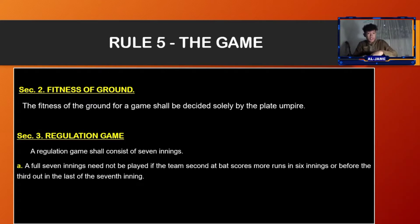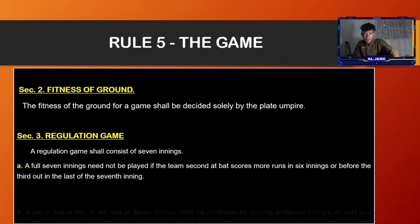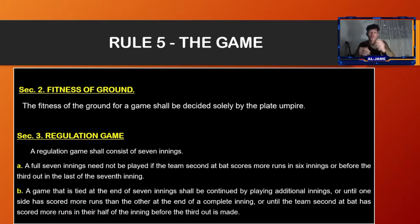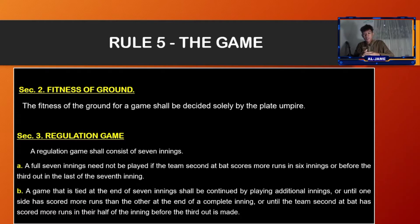A game that is tied at the end of seven innings shall be continued by playing additional innings until one side has scored more runs than the other at the end of a complete inning, or until the team second at bat has scored more runs in their half of the inning before the third out is made.